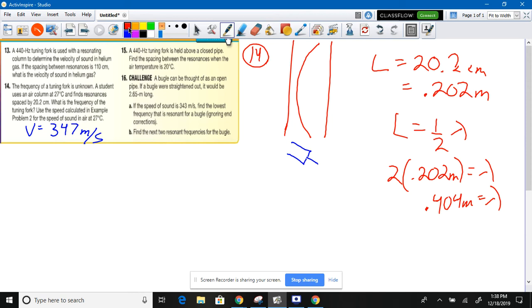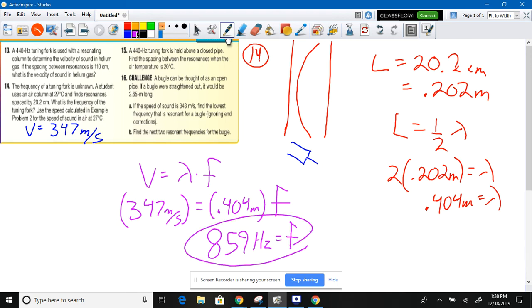How are we going to find the frequency? We're going to use the same equation we've always used. Velocity equals wavelength times frequency. 347 meters per second. Wavelength, 0.404 meters. Frequency, solve for frequency. Trayvon, what did you get for frequency? Bernard Munn, what did you get for frequency? 859 hertz. It rounds up to 859.